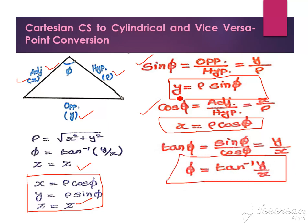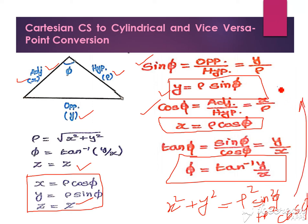Finally, square and add these two terms, y and x. We get x squared plus y squared equals rho squared sin squared phi plus rho squared cos squared phi. Taking rho squared as common, sin squared plus cos squared equals 1, so x squared plus y squared equals rho squared.